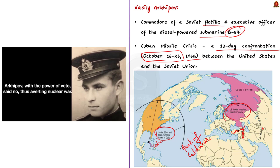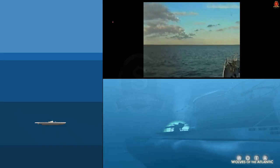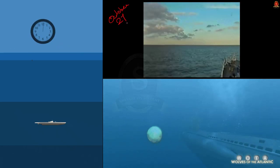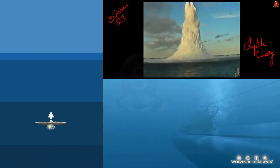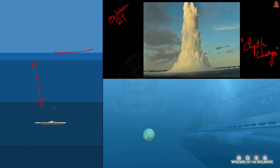The confrontation started on October 16, 1962 and lasted 13 days till October 28, 1962. Initially, the US deployed ballistic missiles in Italy and Turkey. In retaliation, the Soviet Union deployed ballistic missiles in Cuba. This situation could have developed into a full-fledged nuclear war between the US and Soviet Union, leading to a third world war. But it was courageously prevented by one man's decision — Vasili Arkhipov. On October 27, US Navy destroyers detected the presence of Soviet submarines and began dropping depth charges to force the Soviet submarines to surface.